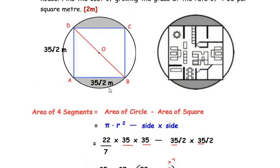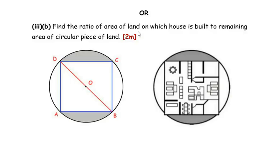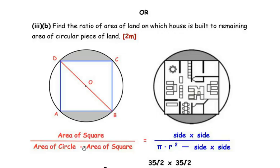Now the OR question: find the ratio of the area of land on which the house is built to the remaining area of the circular piece of land. The area of land on which the house is built is the area of the square, and the remaining area is the area of the four segments. So the ratio is: area of the square over (area of circle minus area of square).